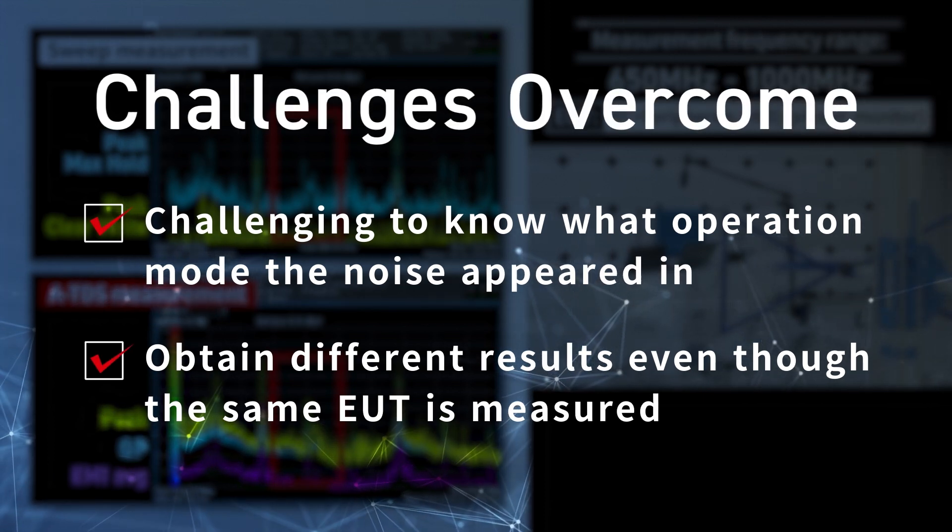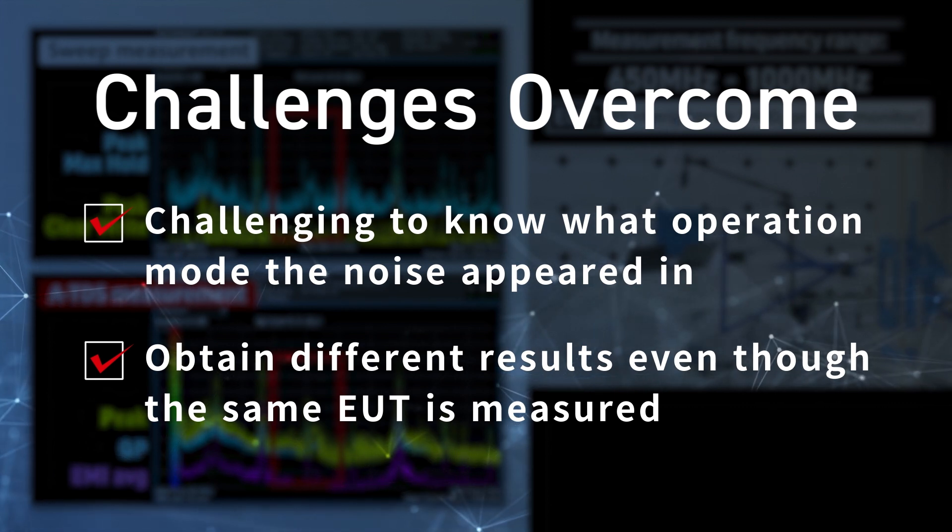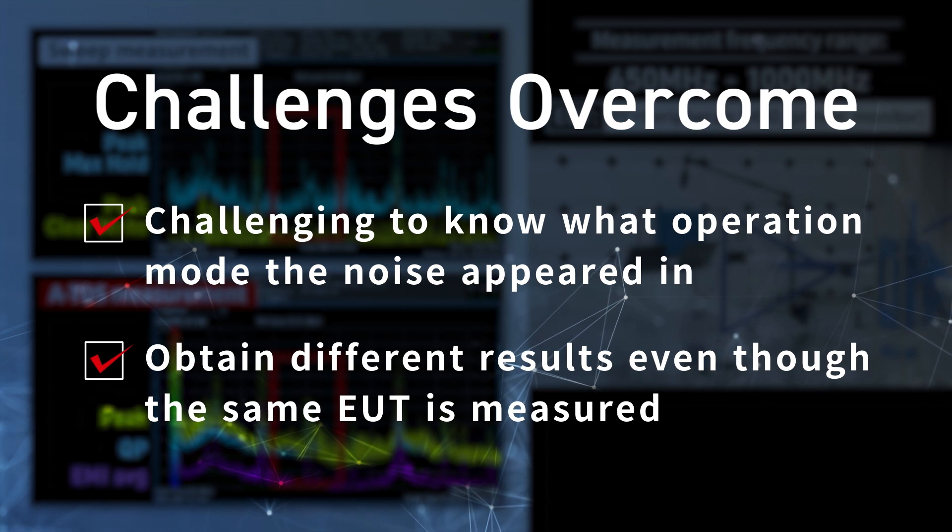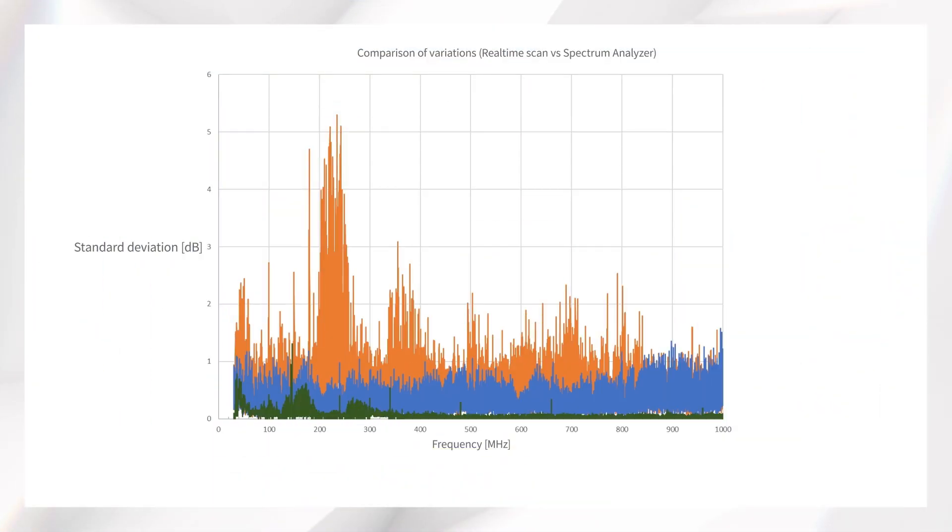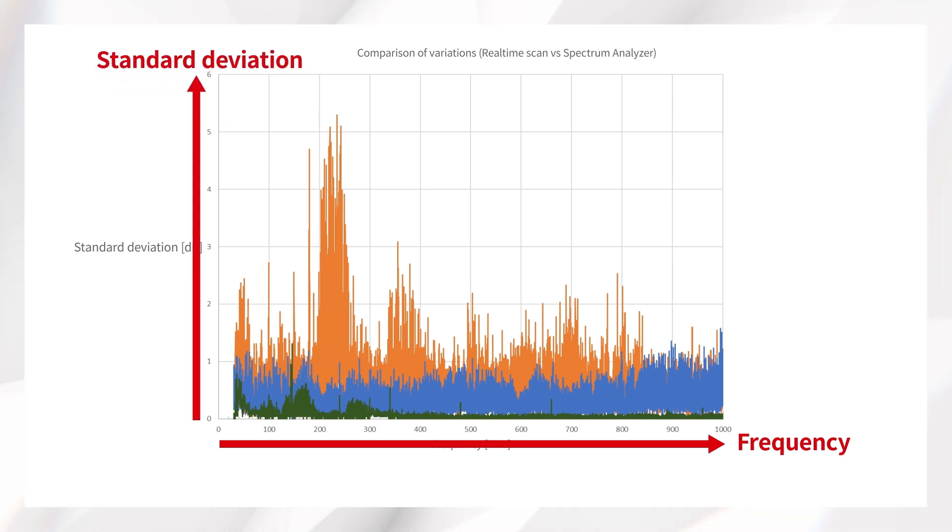Compared with the traditional sweep measurement, it helps substantially reduce the variations in the measurement values. The graph shows the variations in measurement results in both the sweep and ATDS measurements. The horizontal axis represents the frequency, while the vertical axis represents the standard deviation.